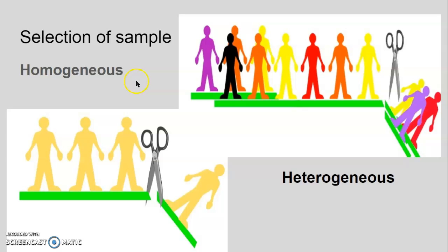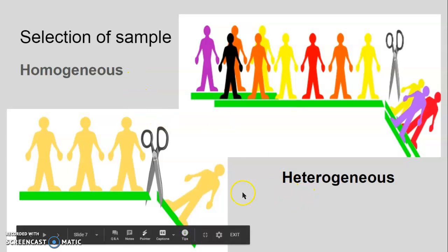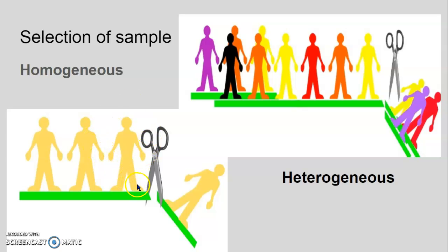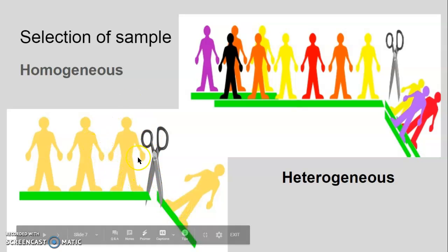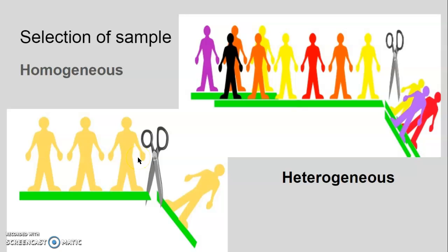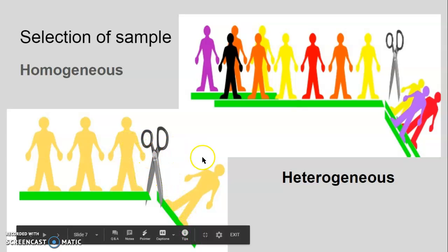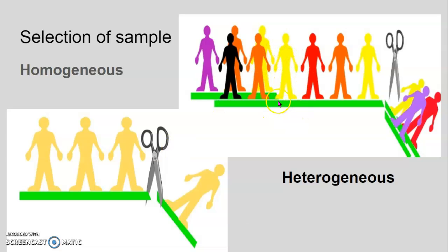Selection of sample can be done by a homogeneous or heterogeneous method. Homogeneous means the group will have the same characteristics, so you can take one sample representing all. In a heterogeneous group there are different colors or different characteristics, and when you select the sample you must make sure that every characteristic is represented in your group — for example, women, men, and children should all be included.